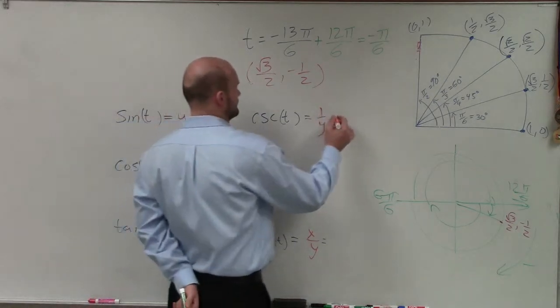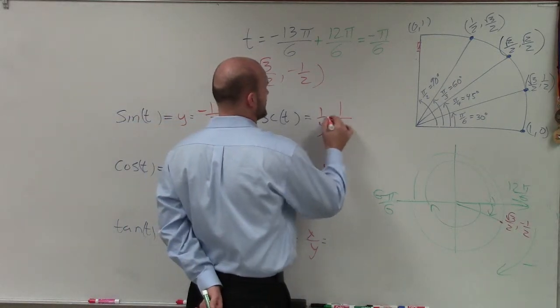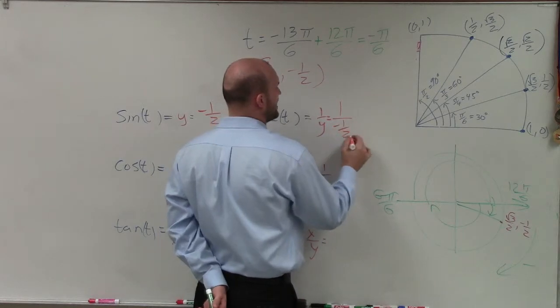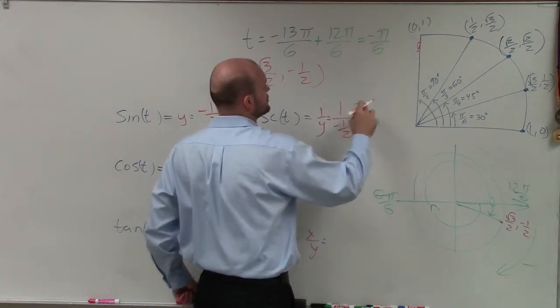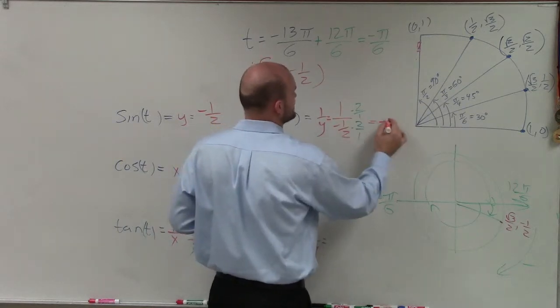For the cosecant, I have 1 over my y-coordinate, which is 1 over negative 1 half. Again, I can just multiply by the reciprocal. So that's 2 over 1 times 2 over 1. So my final answer is a negative 2.